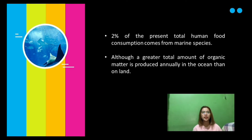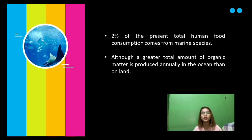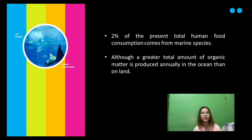Much of this text deals with descriptions of marine communities and the interactions between physical, chemical, and biological properties that determine the nature of these associations. Some attention is also given to the exploitation of marine biological resources. Despite the fact that the ocean occupies almost three-quarters of the Earth's surface, only two percent of the present total human food consumption comes from marine species, though this two percent is entirely important for humanity's survival.